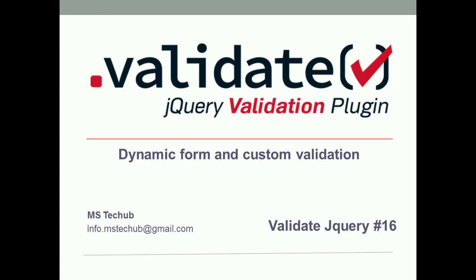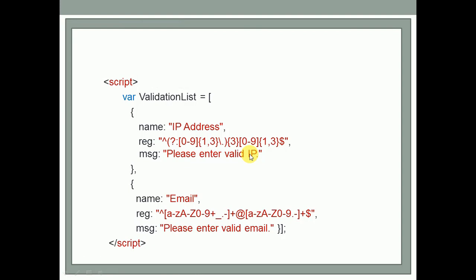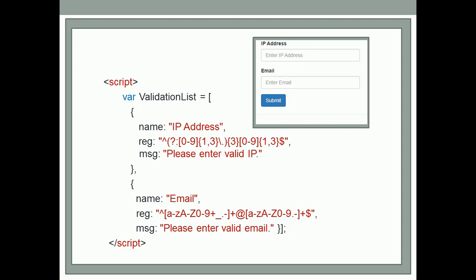Hello and welcome to MS Stack Up. This is the continuation of the validation series. In this video we are going to discuss dynamic forms and custom validation, and this custom validation will be based on a particular JSON. This JSON will produce a form with fields like IP address and email, and the IP address field has a regular expression validation defined in the JSON.